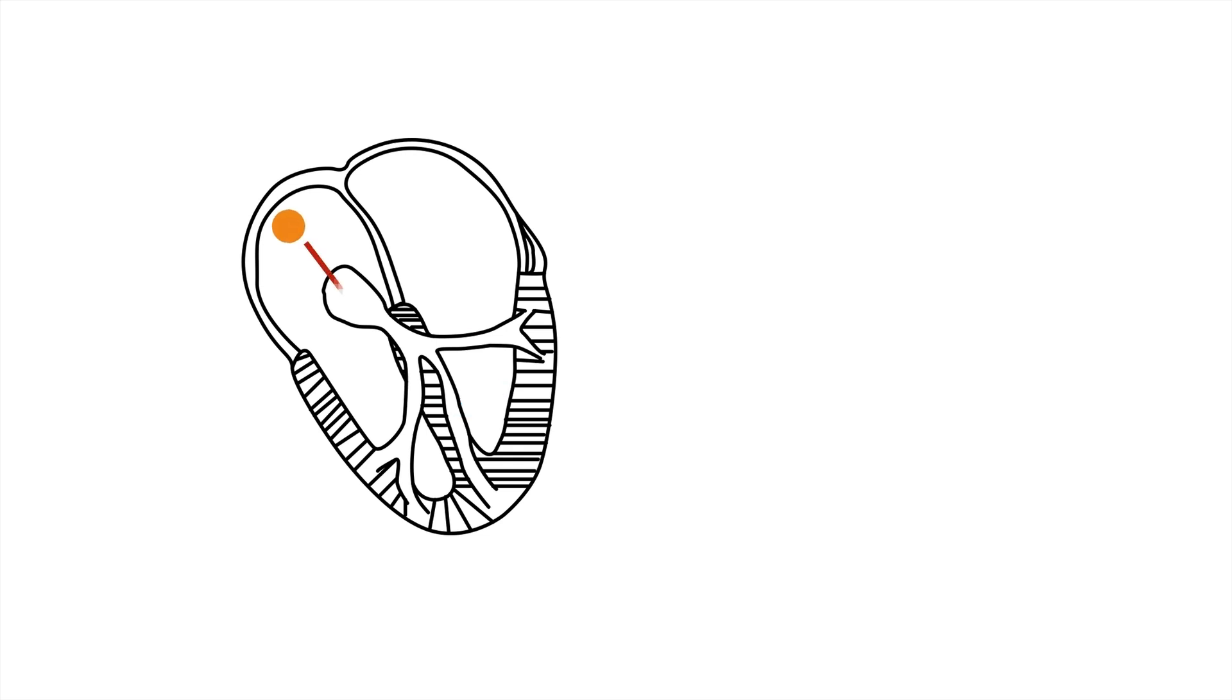When impulses are generated in the atria and are conducted into the ventricles through the AV node, the bundle of His, and the bundle branches, the ECG will look like this. Ventricular depolarization happens fast, and therefore the QRS complex is narrow.